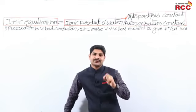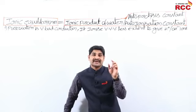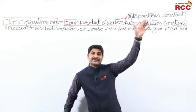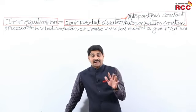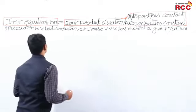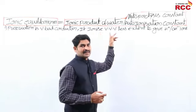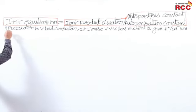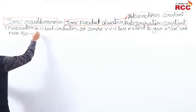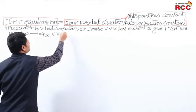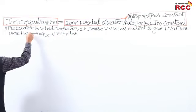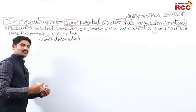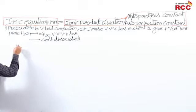Rain water is a bad conductor of heat and electricity. The degree of dissociation of pure water is very, very less. So for pure water, the degree of dissociation is almost negligible — pure water cannot dissociate. If dissociation does occur, it is almost neglected.